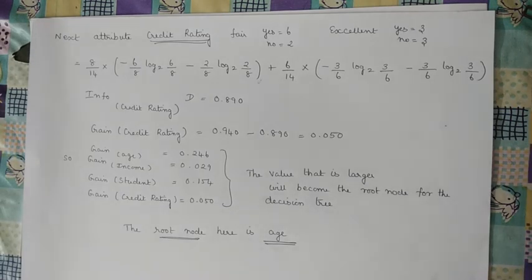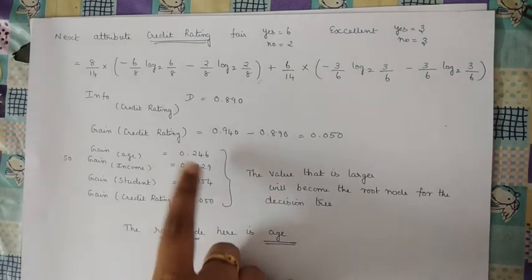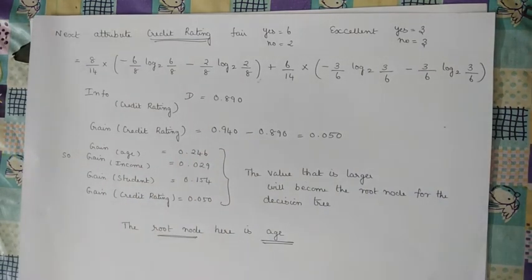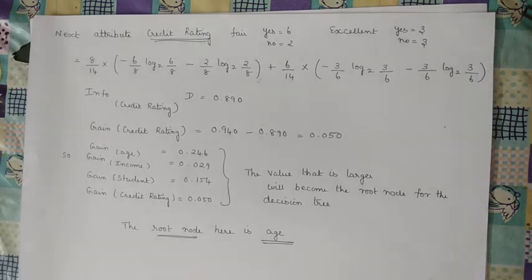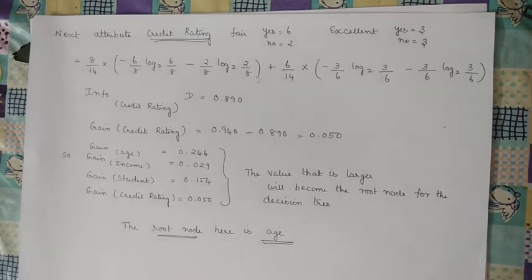Now we have gain values for all four attributes. Comparing them: Gain(age) = 0.246, Gain(income) = 0.029, Gain(student) = 0.154, Gain(credit_rating) = 0.050. The attribute with the largest gain value is selected as the root node. Here, Gain(age) is the largest, so the root node will be age. This is how you find the root node using the information gain attribute selection measure.